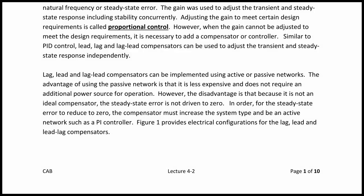Lag-lead and lag-lead compensators can be implemented using active or passive networks. The advantage of using the passive network, which includes only resistors, inductors, and capacitors, is that it is less expensive and does not require an additional power source for operation, unlike an operational amplifier. However, the disadvantage is that because it is not an ideal compensator, the steady-state error is not driven to zero. In order for the steady-state error to reduce to zero, the compensator must increase the system type and be an active network, such as a PI controller, which would require an op-amp to implement.